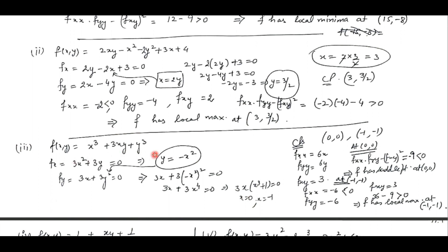In the third part, we are having this function. We have to find out local maxima and local minima. So we first find out the partial derivatives, put them to be 0, and simplify the two equations. We get two critical points: (0, 0) and (-1, -1). We cannot consider (0, -1) or (-1, 0) as critical points because they do not satisfy the equations simultaneously — when x is 0 you get y is 0, and when x is -1 you get y is -1.